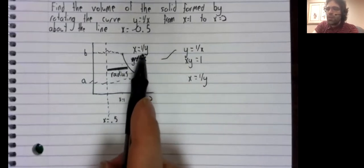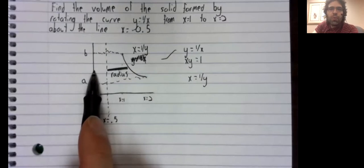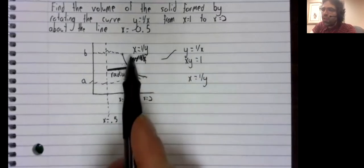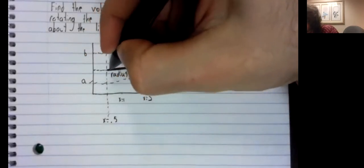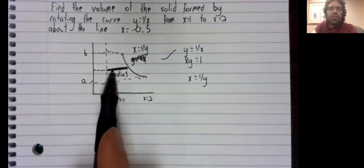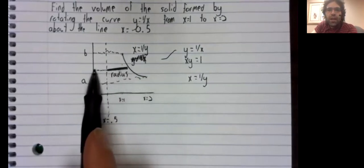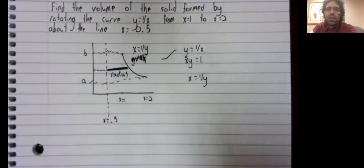This is going to help us find the radius. X equals one divided by y is the distance from x equals zero to this curve. In other words, one divided by y is the length of this line segment. And of course, it includes stuff we don't want, this little piece here.